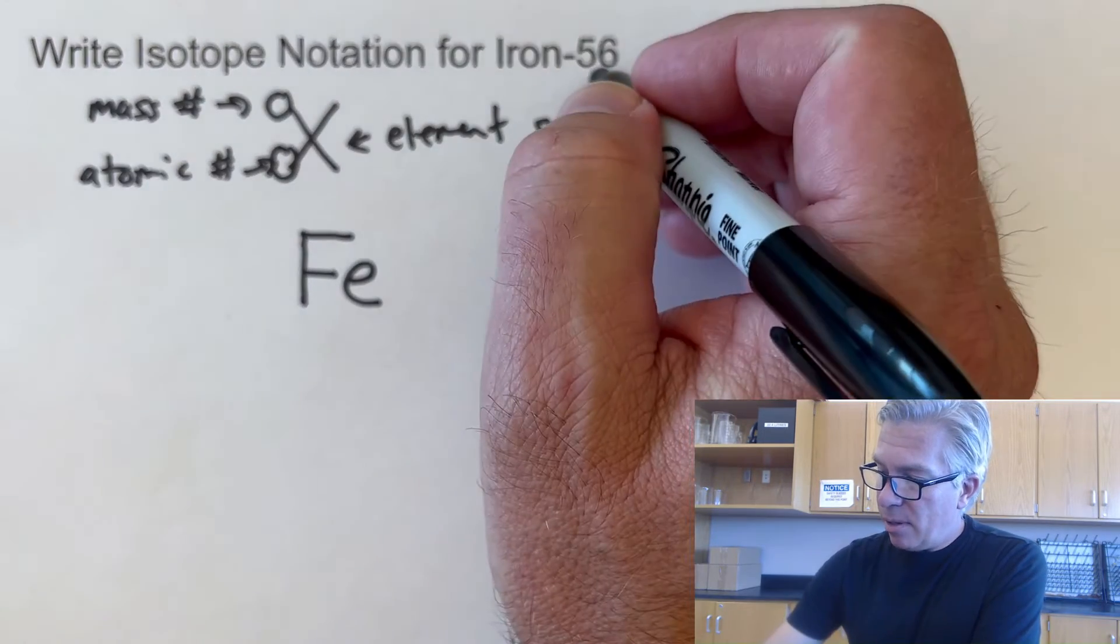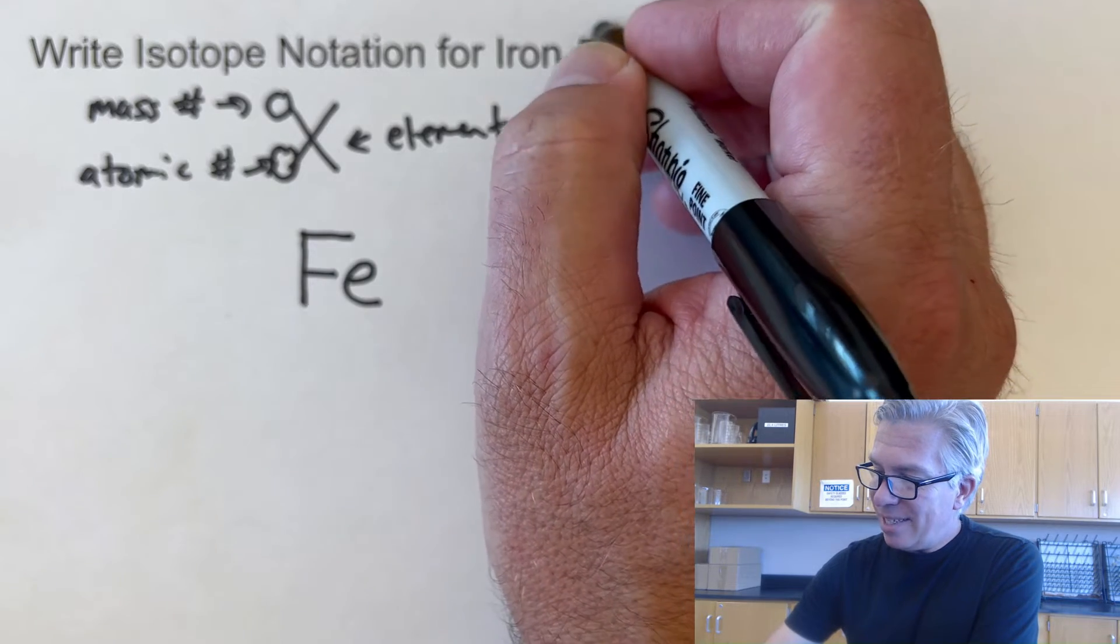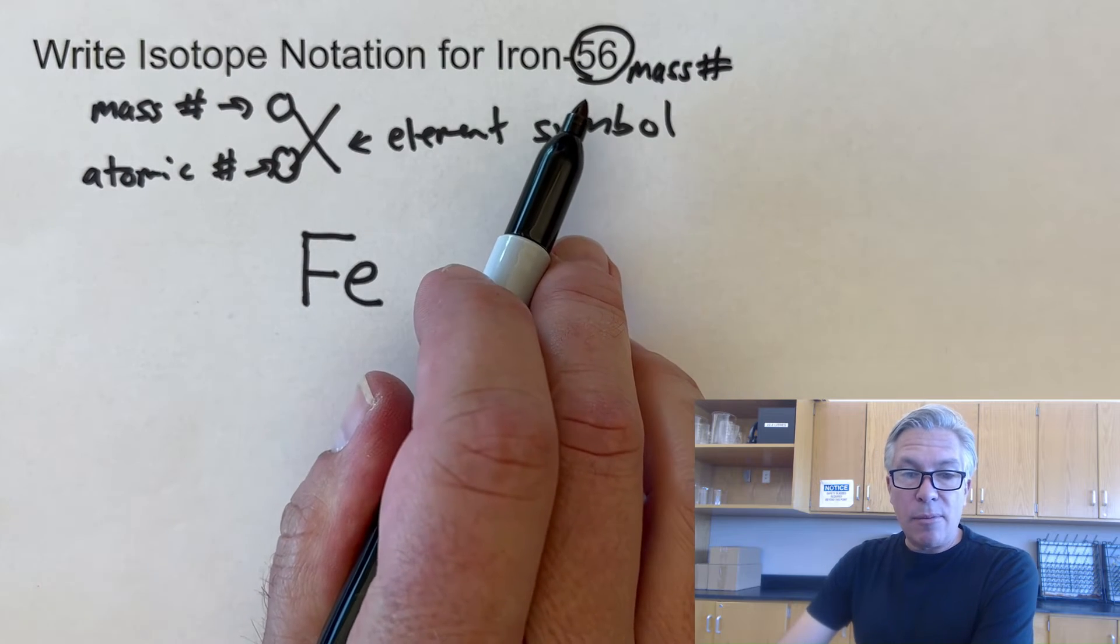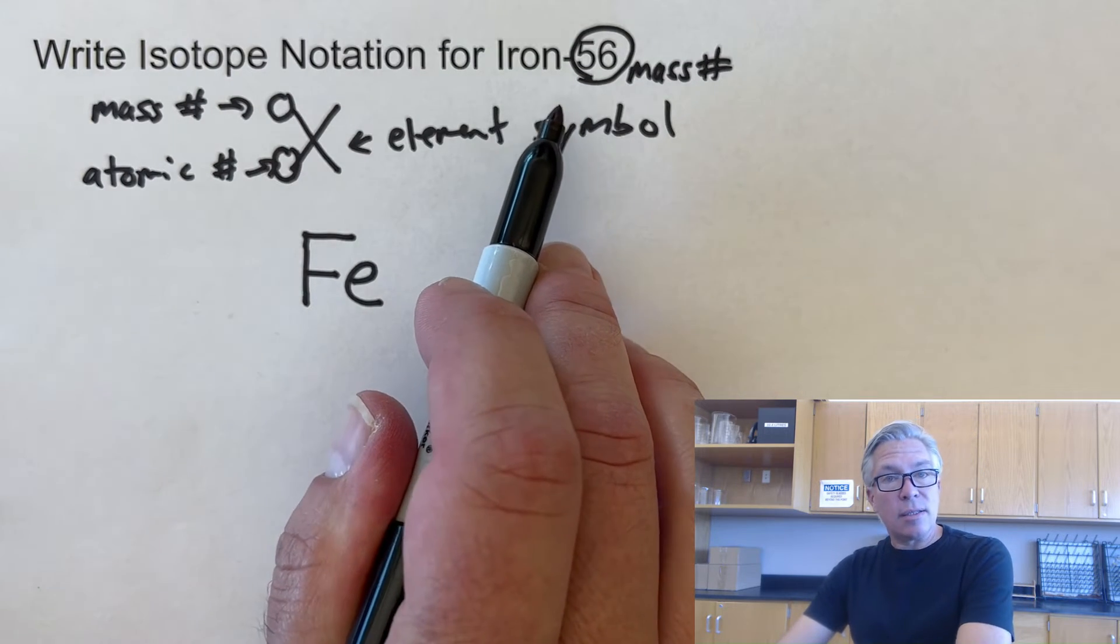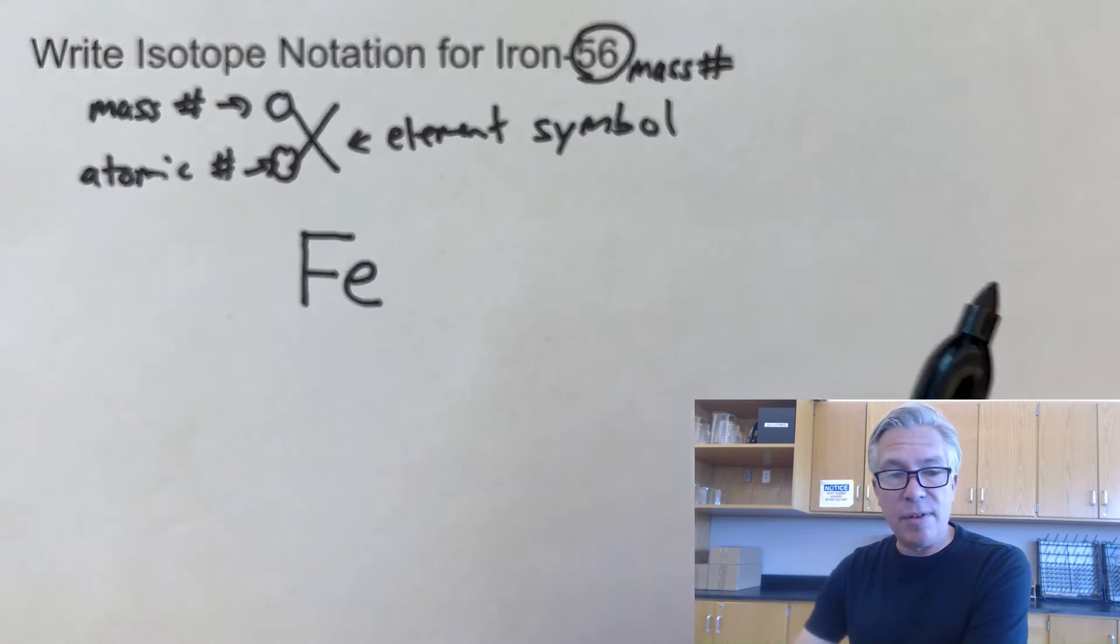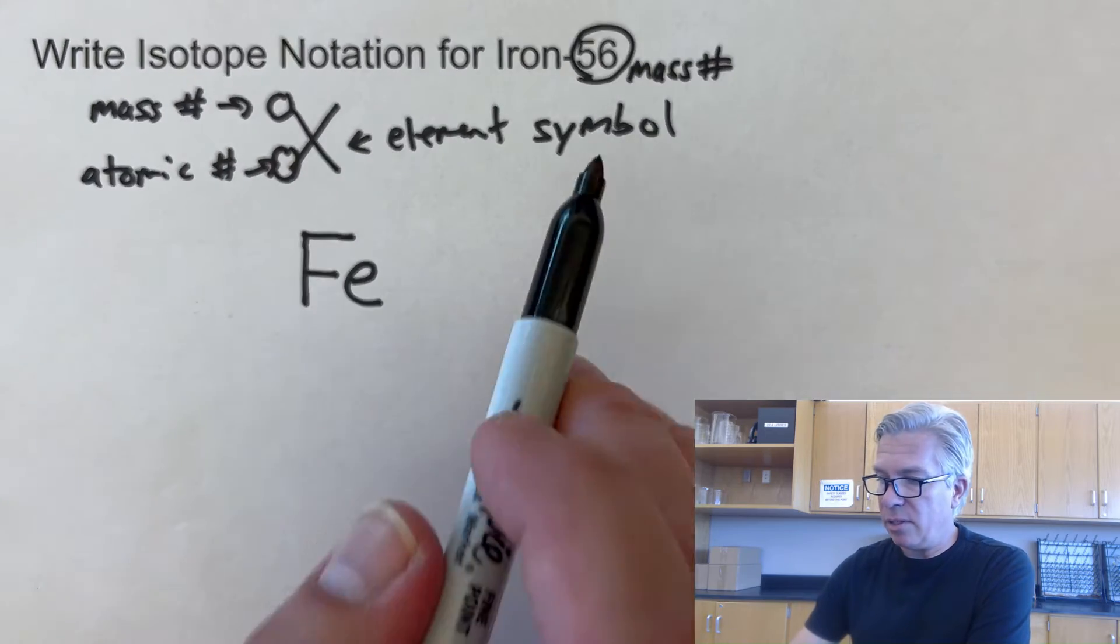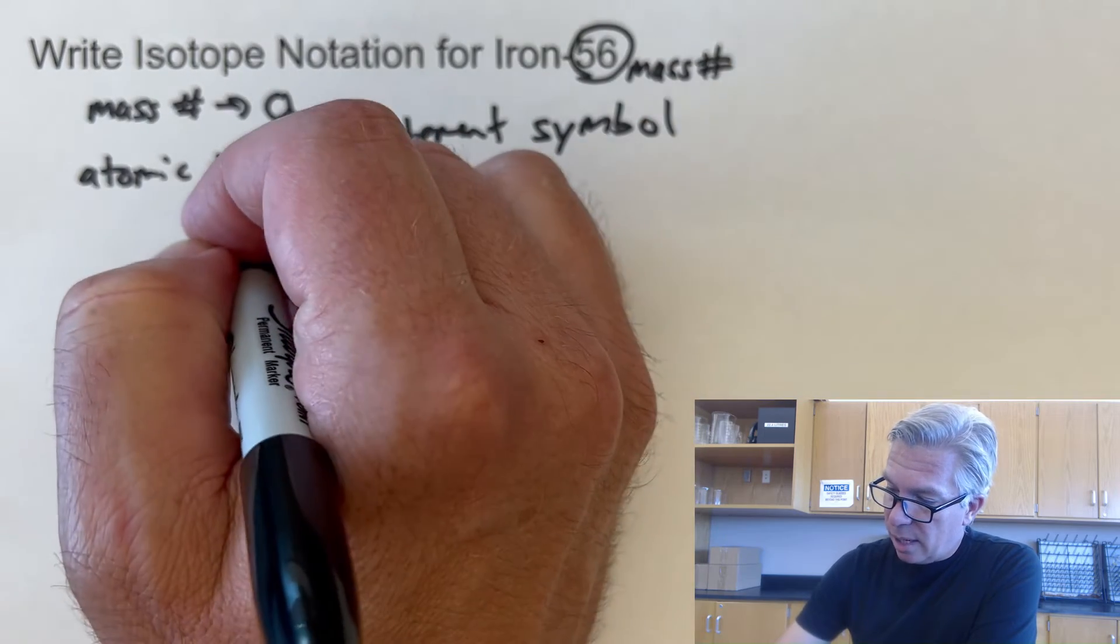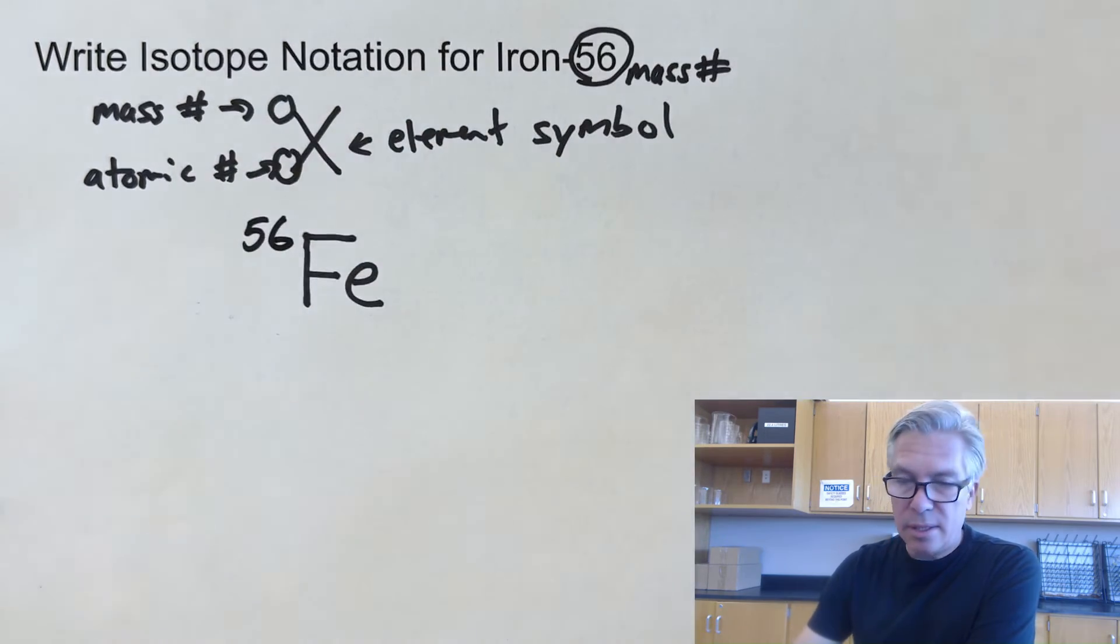Now in the name right here, this right here is the mass number. Not all atoms of iron have a mass of 56. But this one does. So we got to go with it. Some have 55, 54 and 57 and so on. But that's the mass number I'm using for my problem right now. And that's the number that's going to go on top. So 56 goes on the top.